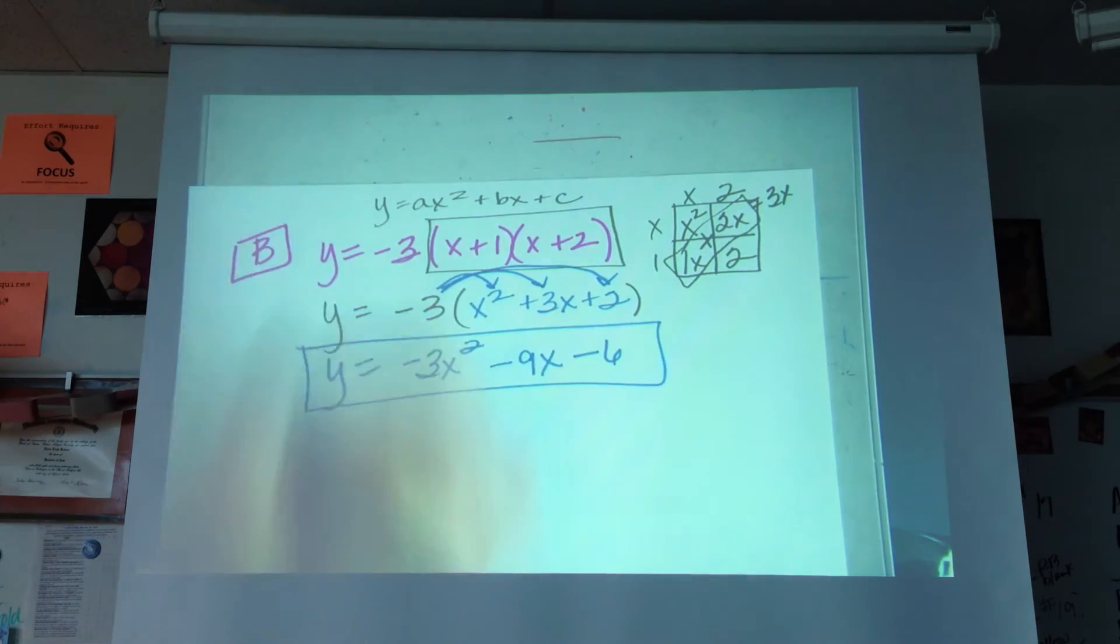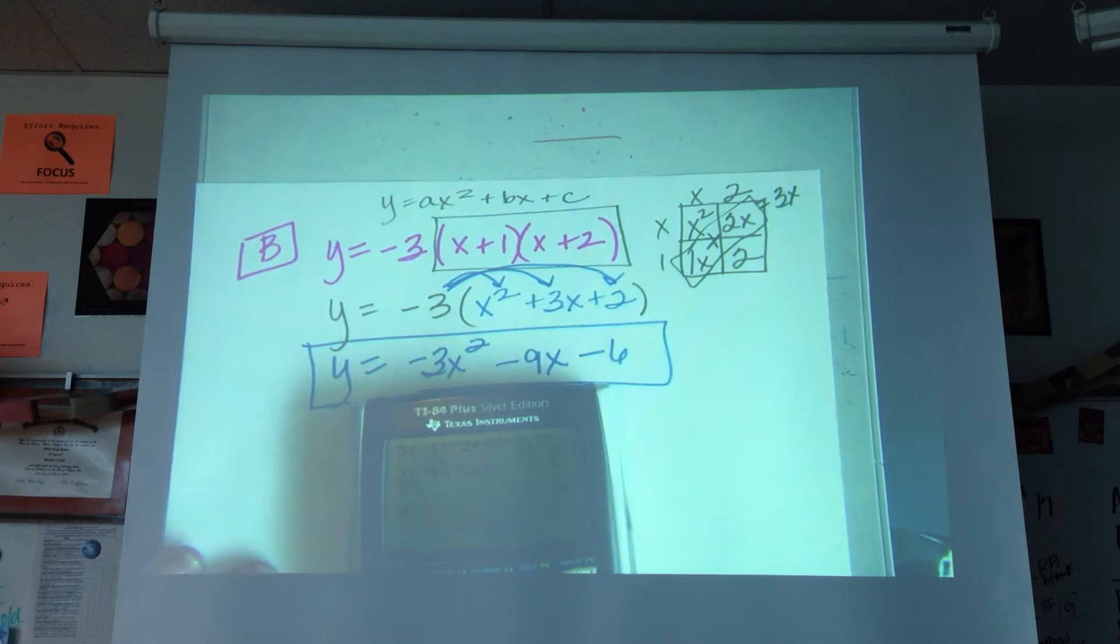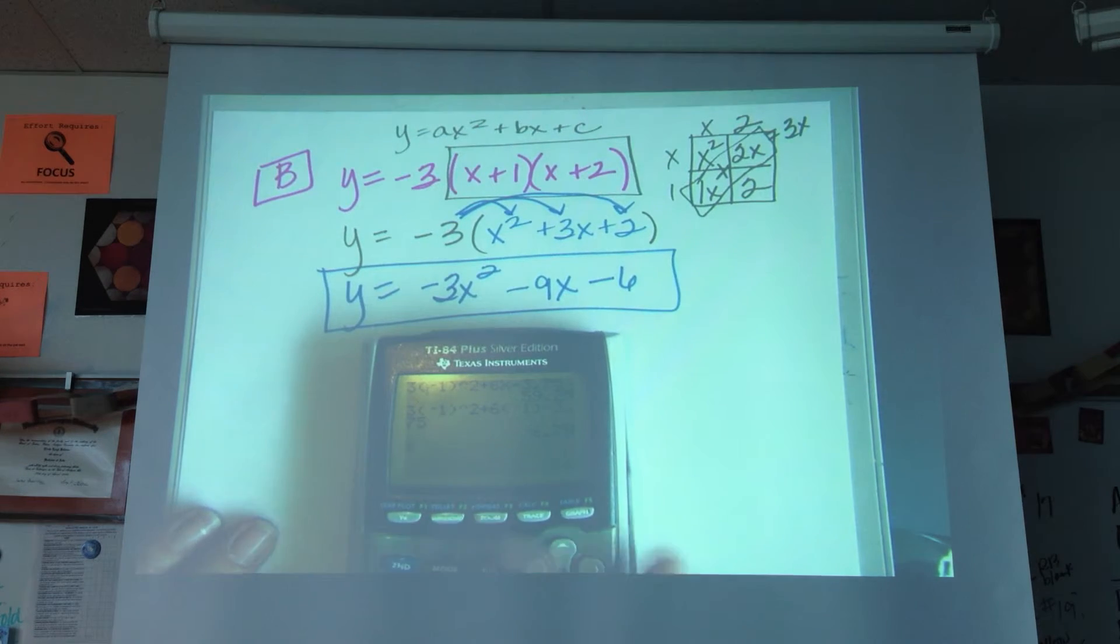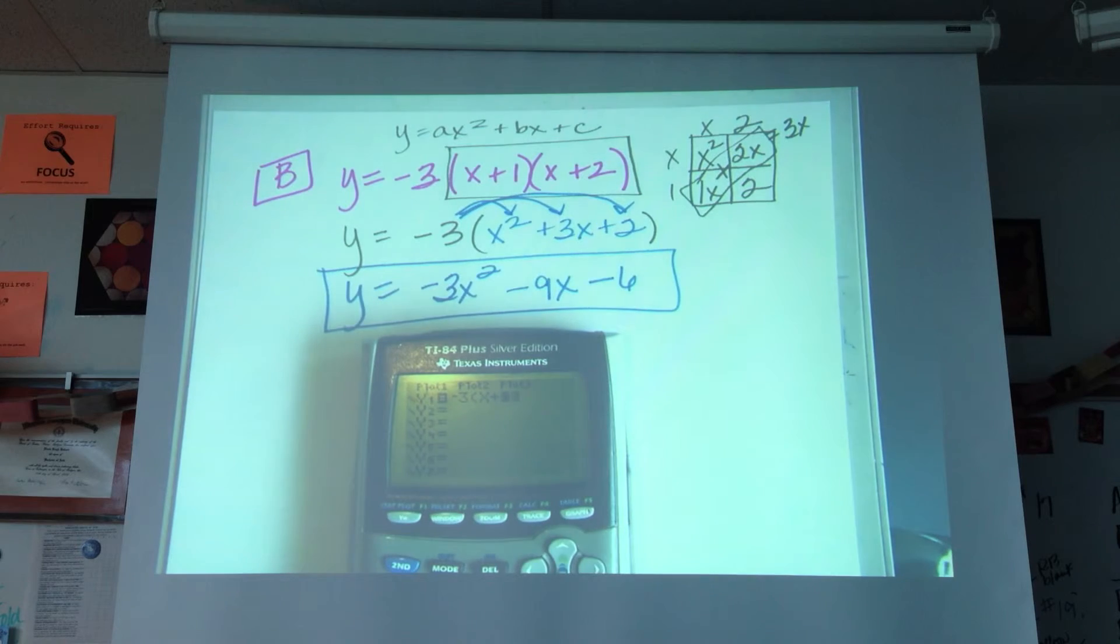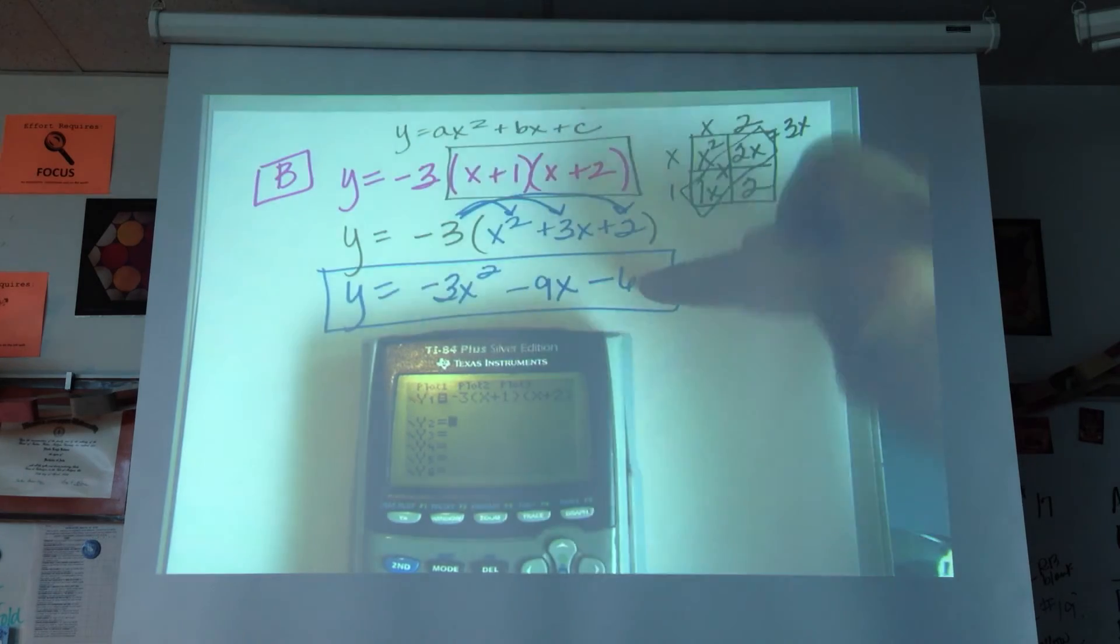And now I have this in the standard form. What this assignment asked us to do was decide if these were resulting in the exact same parabola. So what I'm going to do is enter in negative 3 times the quantity X plus 1. I'm going to just enter the first equation I started with, and then I'm going to enter what I ended with.